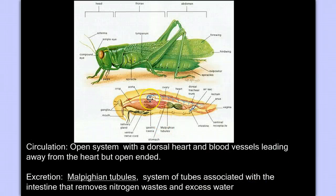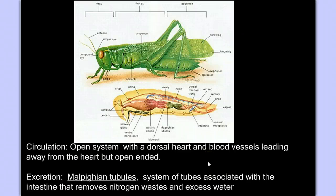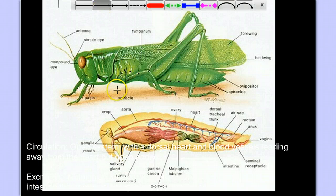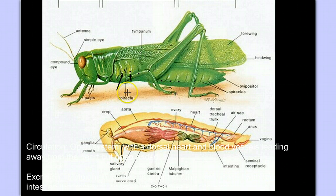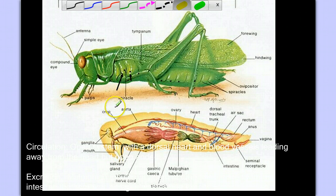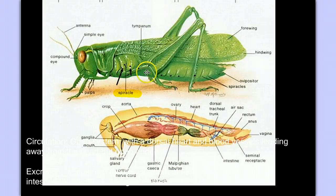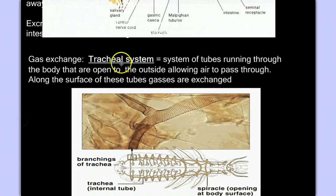When we look at the internal anatomy of insects, we can use a grasshopper as our example. Like all arthropods, we have an open circulatory system, yet insects can be fairly active. Like the arachnids, we have malpighian tubules to get rid of excess nitrogen and metabolic waste. But if you look at the body of an insect, you'll see little holes on the outside — called spiracles — which are openings that act like vents letting air into the body.